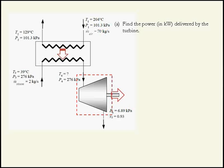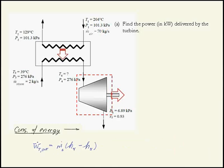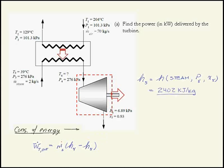We do this in the standard way. We apply conservation of energy to the turbine itself for steady state and no heat transfer, ignoring kinetic and potential energies. We end up with the power out being mass flow rate times the enthalpy drop across the turbine. Finding H5 is not an issue because we have two properties at state point 5: pressure and quality. However, state point 4 is not known because I only have the pressure, not the temperature at state point 4.